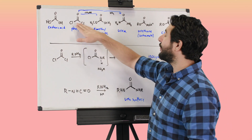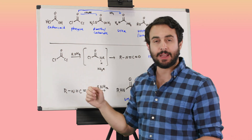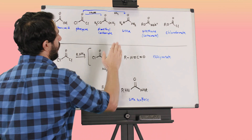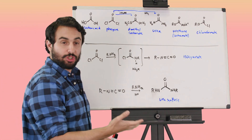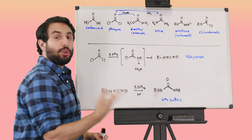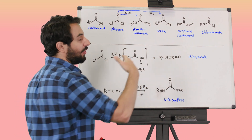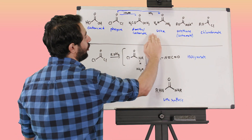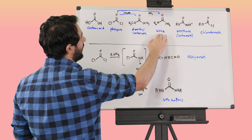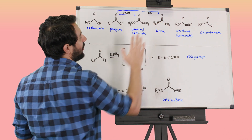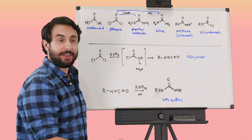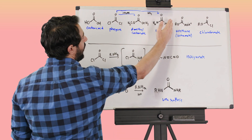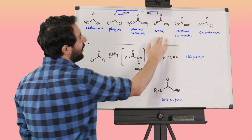We can also react phosgene with an amine like ammonia to generate a urea. This is just urea, but there are other ureas — we can replace hydrogen with alkyl groups and those would also be considered ureas. Urea is a natural product in your body. This is essentially like a double amide: we've got an amine on either side of the carbonyl. So that is urea.